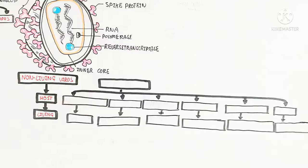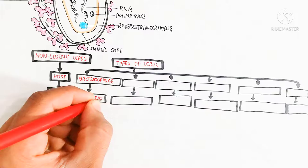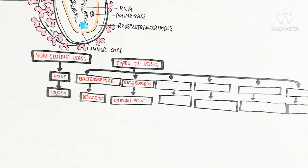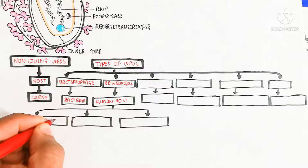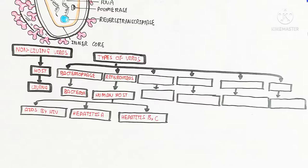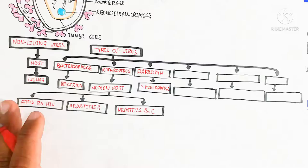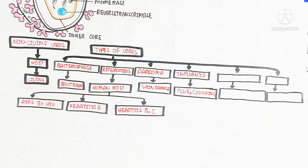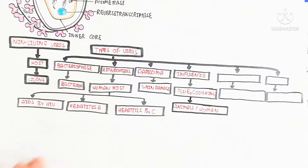Let's begin to understand the types of virus. Here is the bacteriophage, which infects E. coli bacteria. On the other hand, the retrovirus has a specific human host, causing AIDS by infecting T lymphocytes. There is also hepatitis B and C, papilloma virus which causes skin damage, and influenza virus which causes flu and coughing.